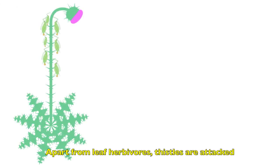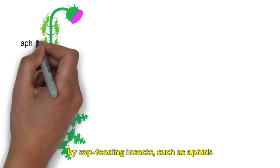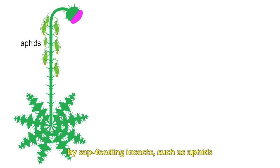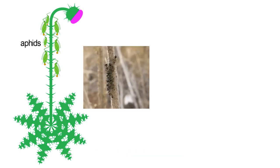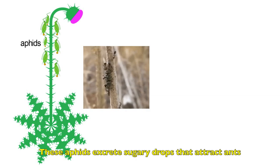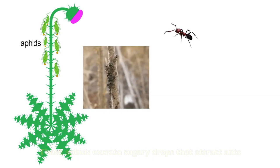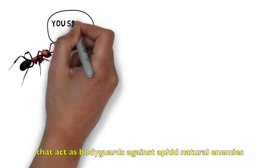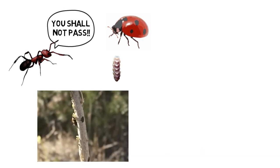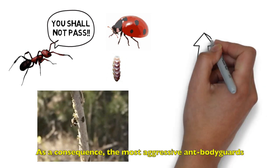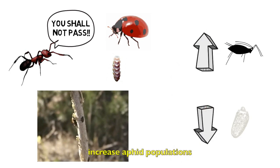Apart from leaf herbivores, thistles are attacked by sap-feeding insects such as aphids, which limit plant resources affecting seed production. These aphids excrete sugary drops that attract ants of varying levels of aggressiveness, which act as bodyguards against aphid natural enemies such as ladybugs and syrphid larvae. As a consequence, the most aggressive ant bodyguards increase aphid populations, further reducing thistle reproduction.